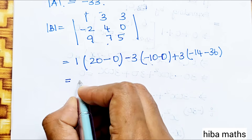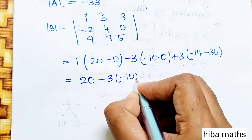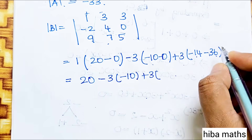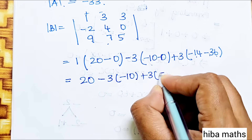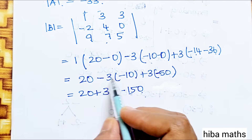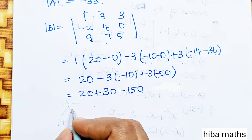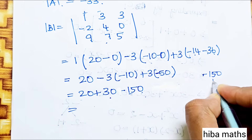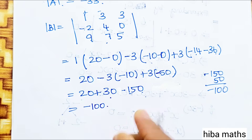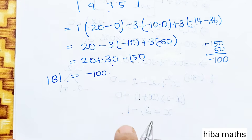So det(B) = 20 minus 0 = 20, minus 3 into (−10) plus 30, plus 3 into 36 giving −100. The modulus of B value is −100.